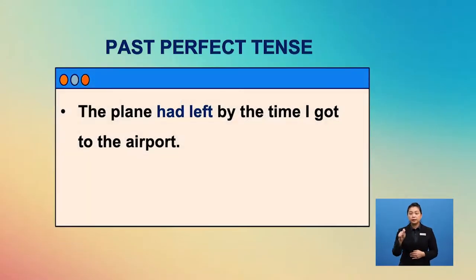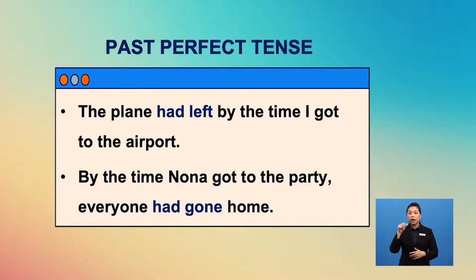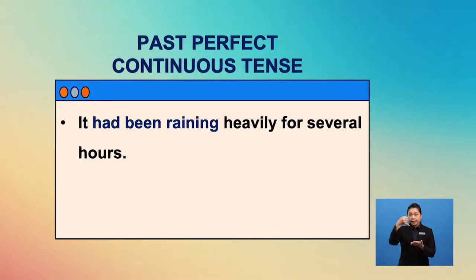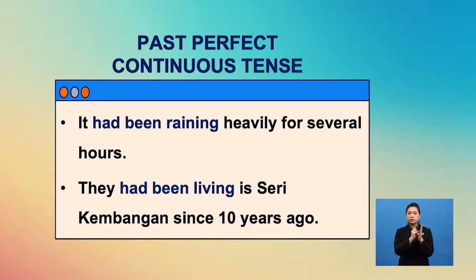Next, the past perfect simple is important to explain an action that happened before the time of the narrative or another past action. For example: 'The plane had left by the time I got to the airport.' And: 'By the time Nona got to the party, everyone had gone home.' Last but not least, use the past perfect continuous tense to talk about an action that was in progress for some time in the past. For example: 'It had been raining heavily for several hours.' And: 'They had been living in Seri Kebangan since 10 years ago.'